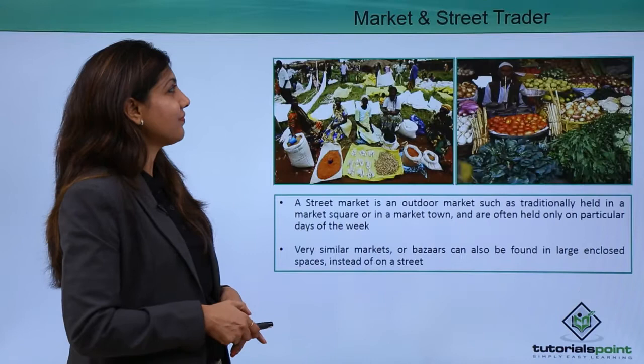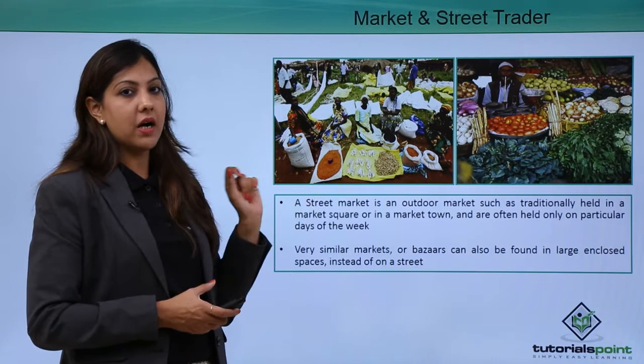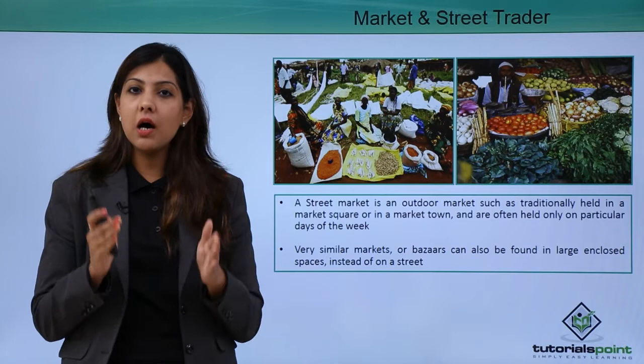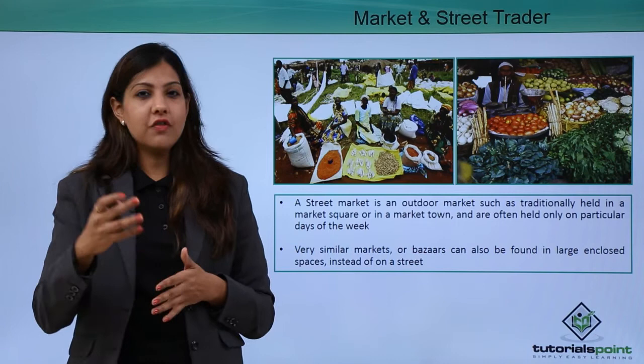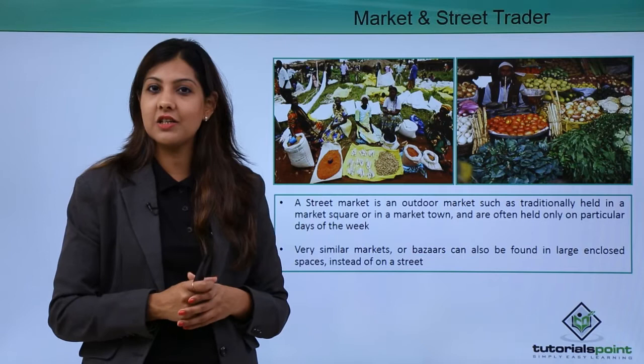A street market is an outdoor market traditionally held in a market square or market town. In most cities there is a hub or marketplace where people from different parts of the city come to buy things. These are often held on a particular day of the week — weekly haats like Monday haats, Wednesday haats, or Saturday haats.